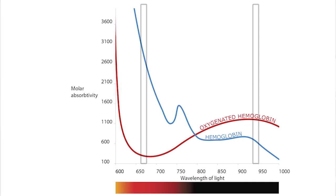There are particular reasons we've chosen the two wavelengths of light used for pulse oximetry. These are the two wavelengths at which the absorption coefficients for each substance — oxygenated and deoxygenated hemoglobin — are the most different.